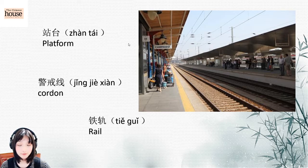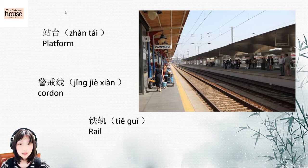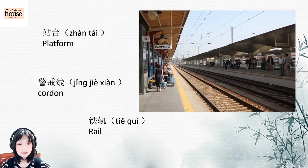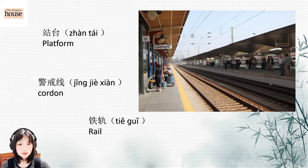We have learned this before — 站台 (zhàntái), which means platform. So the platform is where you stand and wait. And rail: 铁轨 (tiě guǐ). 铁 means iron, 轨 means track.